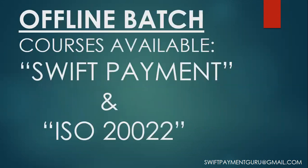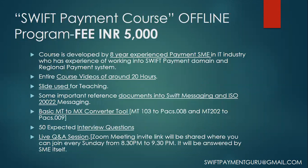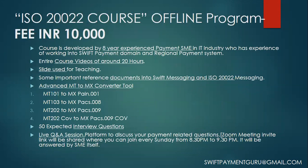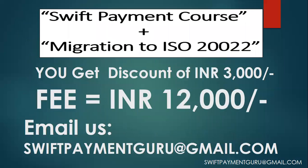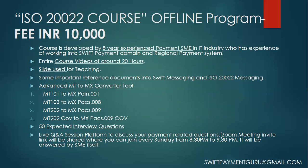We have offline batch courses available — course videos for both the SWIFT payment course and the ISO 20022 course, totaling around 36 to 38 hours of video. Individually, the SWIFT payment course costs 5,000 rupees and the ISO 20022 course costs 10,000 rupees. If you buy both together, it costs 12,000 rupees — a discount of 3,000 rupees. Email us at swiftpaymentguru@gmail.com for payment details and video access. We also provide converter tools showing how MT messages map to MX messages.